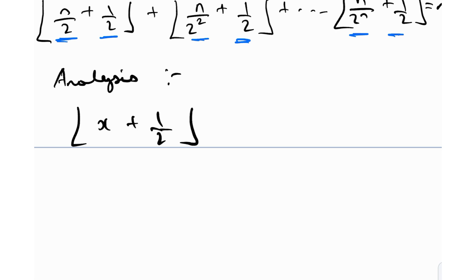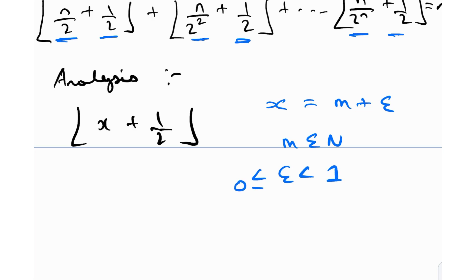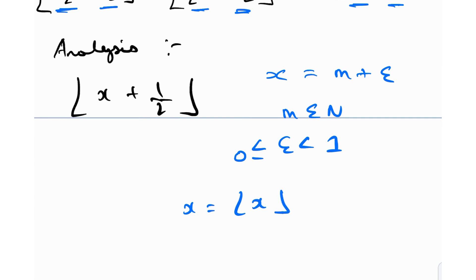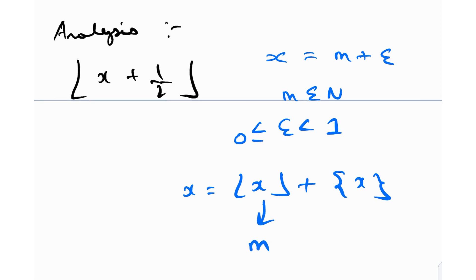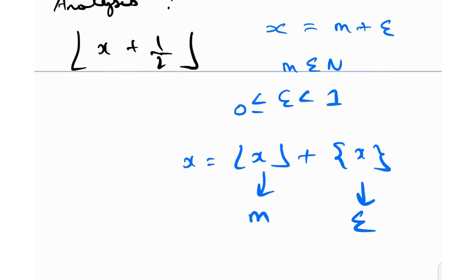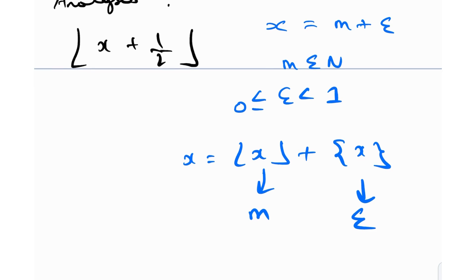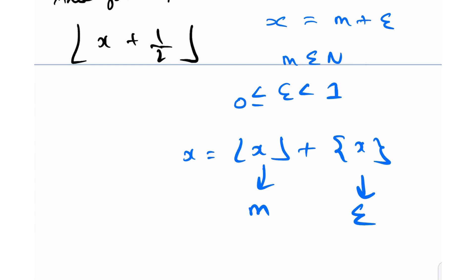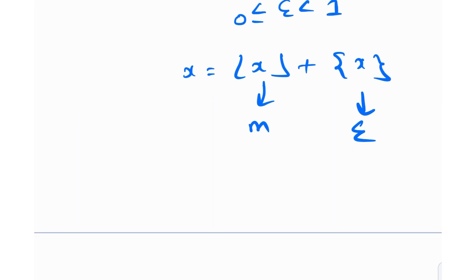I'm going to use a little notation. Any real number x can be represented as m + ε, where m is an integer and ε is between 0 and 1. We essentially write x = floor(x) + fractional part of x. In this notation, floor(x) becomes m and the fractional part becomes ε. I'll use this notation to avoid confusion since floor already appears in the question.